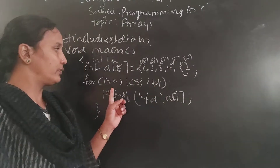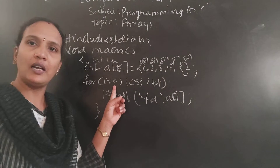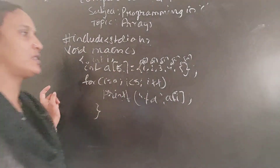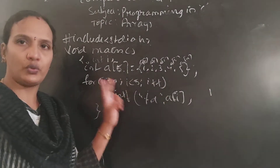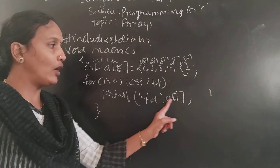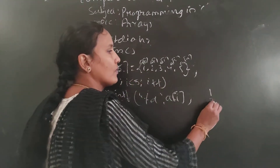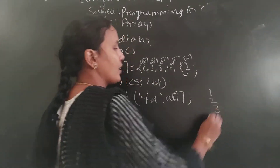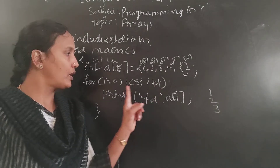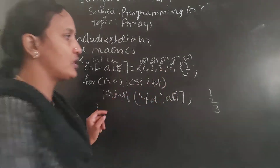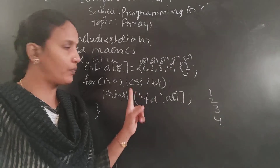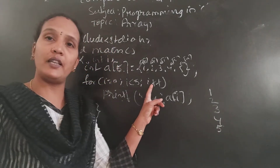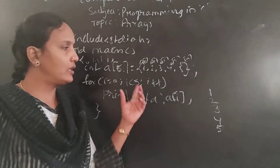So i equals to 0 — array elements are indexed from 0. That is why I am giving i equals to 0, and 0 is less than 5, condition is true. Then A of 0 is printed — the value in A of 0 is 1. Next i is incremented to 1; 1 less than 5, condition is true, A of 1 is printed, which is 2. Again i increments to 2; 2 less than 5, condition true, A of 2 is 3. i increments to 3; A of 3 is 4. i increments to 4; A of 4 is 5. Finally i increments to 5; 5 less than 5 is false, the loop terminates.